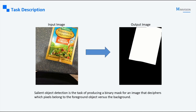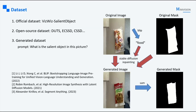Salient object detection is a challenging yet important task in computer vision, which aims to generate a binary mask for the image, indicating which pixels belong to the foreground and which belong to the background. As shown in this slide, the box is considered as a salient object, so in the output image the region corresponding to the box is filled with white pixels to represent the foreground. Our team uses three different datasets: the official dataset, the open-source dataset, and the synthetic dataset.